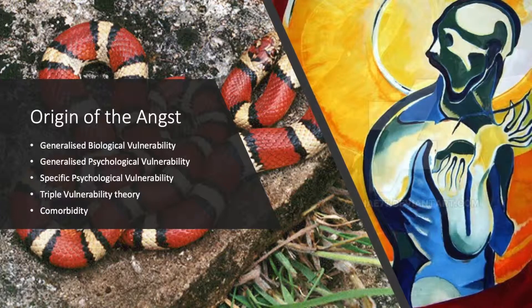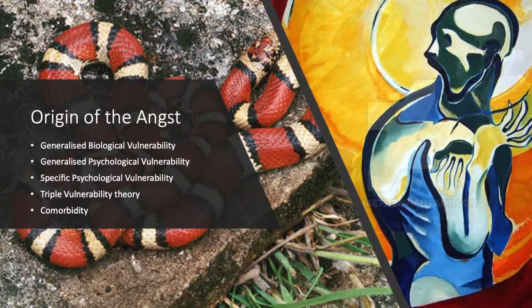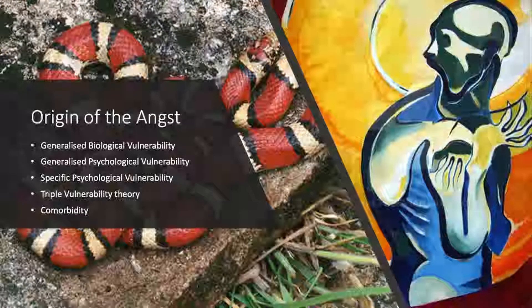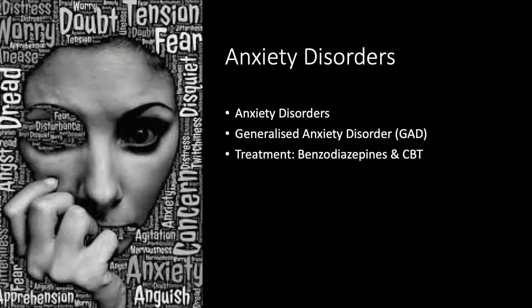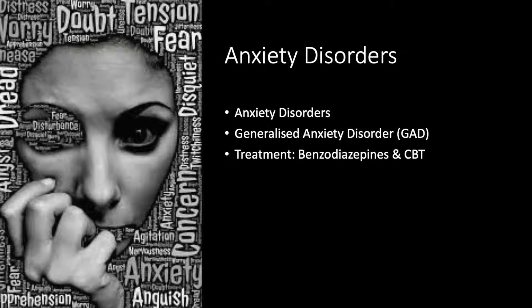Another important term is comorbidity, which is the co-occurrence of two or more disorders at the same time. This may be due to the fact that they trigger the same certain responses, reactions, or mood states. Anxiety disorders are the grouping together of the many generalized and specific anxieties in order to form this criterion.